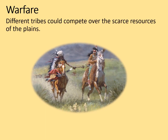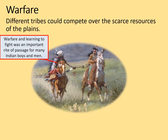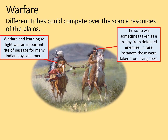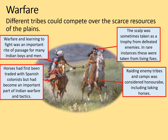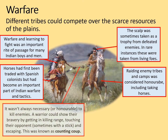Warfare. Different tribes could compete over the scarce resources of the plains. Warfare and learning to fight was an important rite of passage for many Indian boys and men. The scalp was sometimes taken as a trophy from defeated enemies — in rare instances, taken from living foes who survived the ordeal, at least for a short time. Horses had first been traded with Spanish colonists but had become an important part of Indian warfare and tactics. Raiding enemy tribes and camps was considered honourable, including taking horses. But it wasn't always about killing — a warrior could show their bravery by getting in killing range, touching their opponents, sometimes with a stick, and escaping. This was known as counting coup.